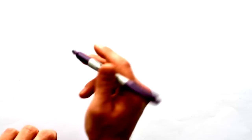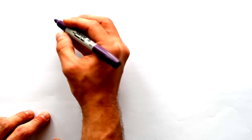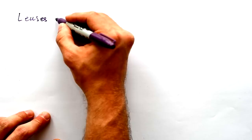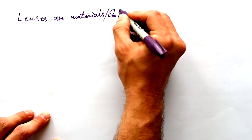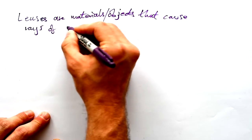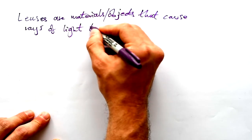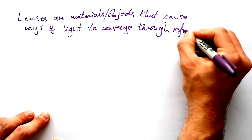Lenses is one thing that I see people get confused about, so let's see if we can figure this out. What is a lens? Lenses are objects that cause rays of light to converge through refraction.